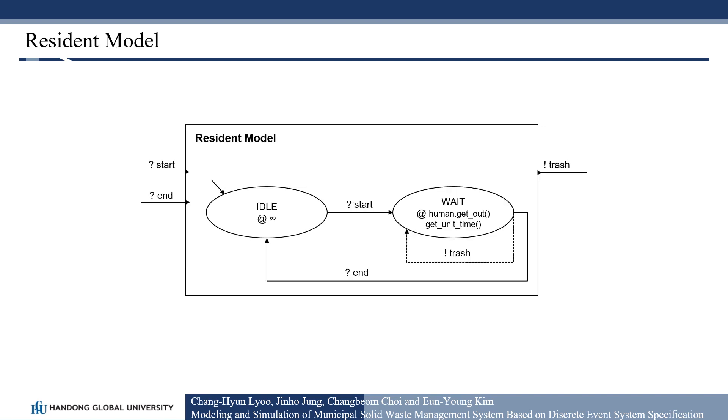The resident model represents a person of the residential area. During the simulation, the resident model may generate a trash event with a given amount of waste generation from a particular resident type instance and send it to the corresponding instance of the family model and check model. Resident will wait for next departure time and repeat to generate a trash event.